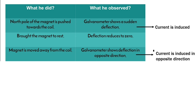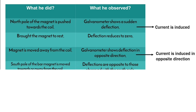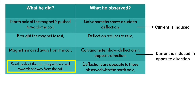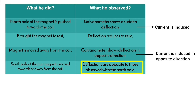Till now he played with the north pole of the bar magnet. Now he took the south pole of the bar magnet and repeated the same procedure, and he observed that the galvanometer deflections are opposite to those observed with the north pole for similar movements.